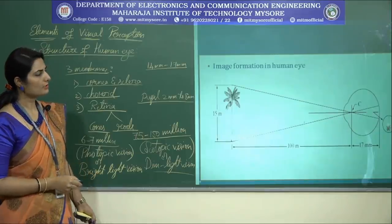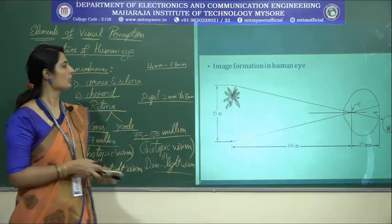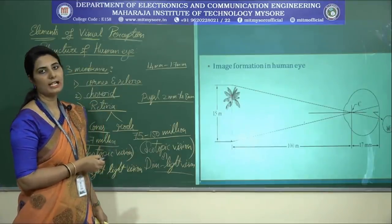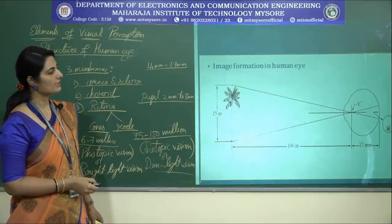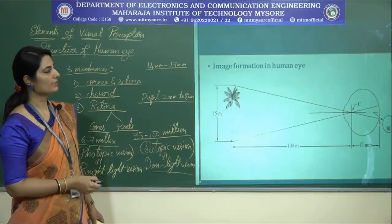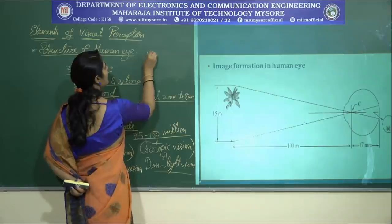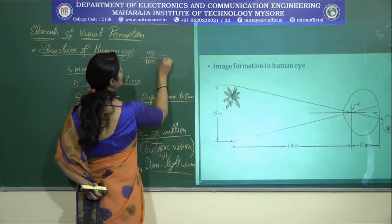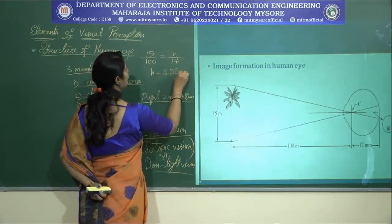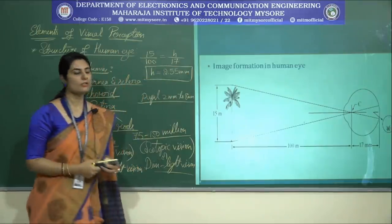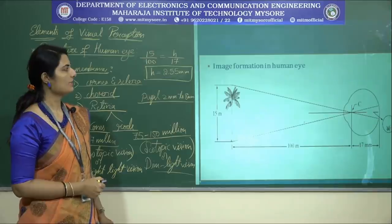To find the dimension of an image on the retina, consider a person focusing on a tree 15 meters high at a distance of 100 meters from the eye. The distance to the imaging plane is constant at 17 millimeters. Using the relation 15/100 = h/17, the dimension of the image on the retina is approximately 2.55 millimeters. This is how we can calculate the size of an object imaged inside the retina, and how image formation works in the human eye.